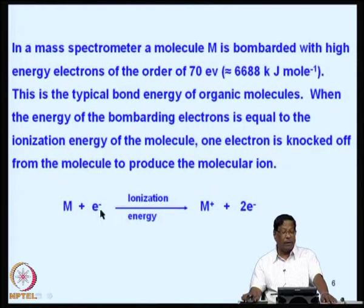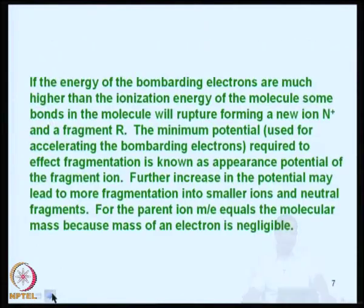The reaction is: M + e⁻ → M⁺ + 2e⁻. If the energy of the bombarding electrons is much higher than the ionization energy, some bonds in the molecule will rupture, and a new ion and another fragment are produced. The new ion is further fragmented to give another new ion. The minimum potential required to effect fragmentation is known as the appearance potential of the fragment ion. Further increase in potential may lead to more fragmentation and more smaller ions, as well as neutral fragments.